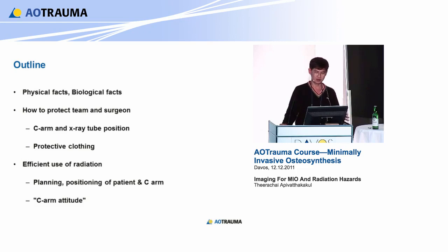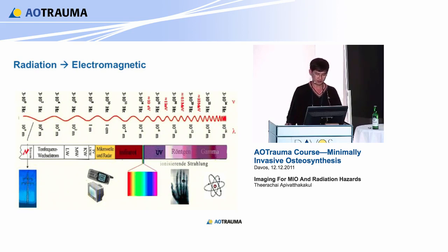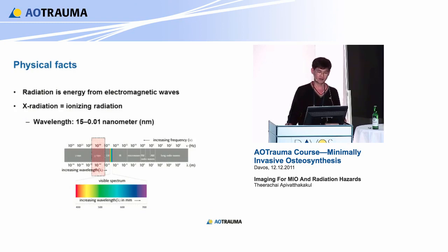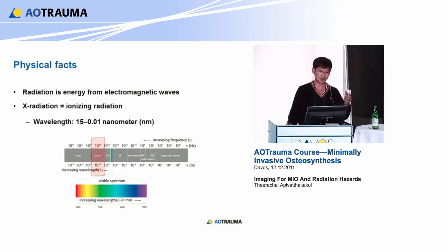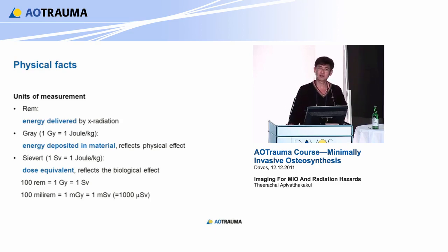There are many various kinds of radiation - it's electromagnetic. But what we want to use is only the X-rays or the Röntgen, in this particular wavelength. It's energy from electromagnetics. How about the units for measurement? You have the RAM - that is the energy delivered by the X-ray, by the radiation. The Gray is the energy deposited in the material or in the bodies of patients. And the one we use the most now - you've heard of it from Chernobyl - is millisieverts or sieverts.